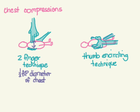The preferred method is the thumb-and-circling technique: both hands encircle the baby with fingers around the back and thumbs on top to deliver compressions. This generates better systolic and coronary perfusion pressures. The downside is that the arms can block umbilical line placement, though some suggest repositioning to work around that.